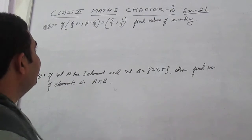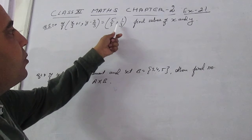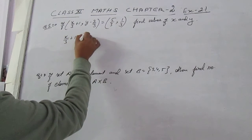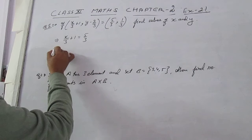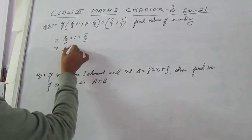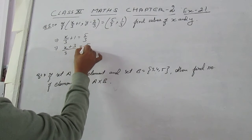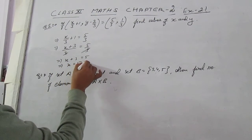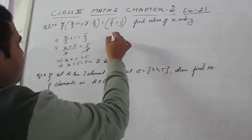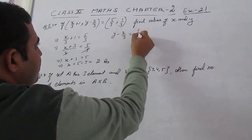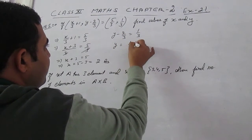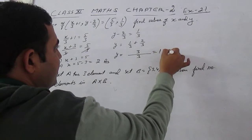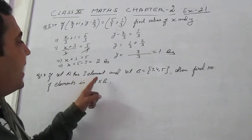Exercise 2.1, Question 1: If (x/3 + 1, y − 2/3) = (5/3, 1/3), find the values of x and y. From here, x/3 + 1 = 5/3. Taking LCM 3: x + 3 = 5, so x = 2. For y: y − 2/3 = 1/3, so y = 1/3 + 2/3 = 3/3 = 1.